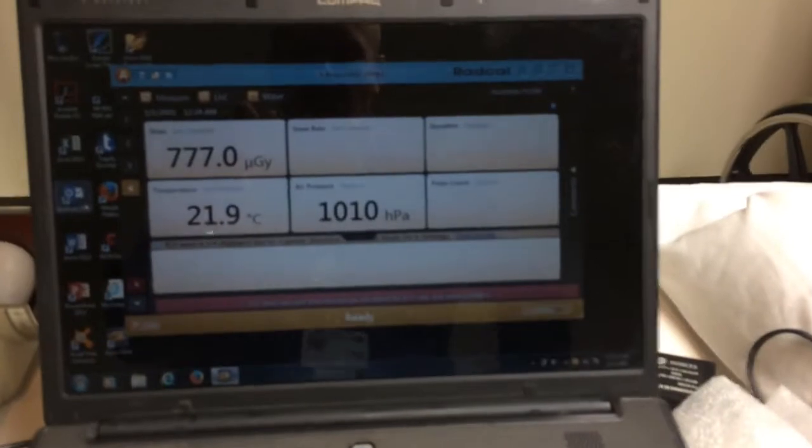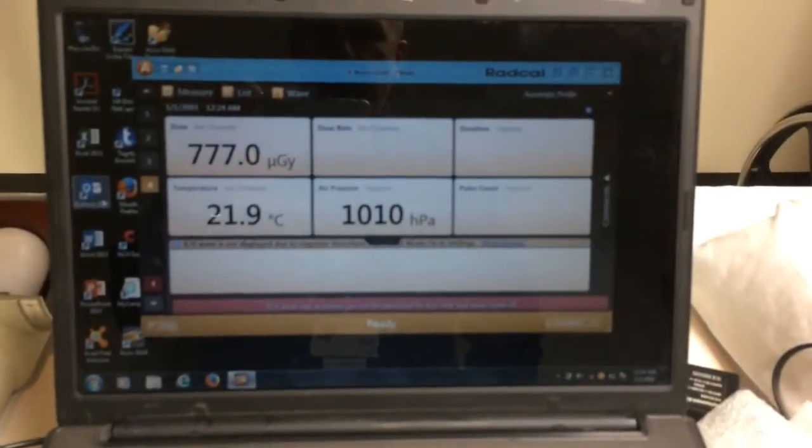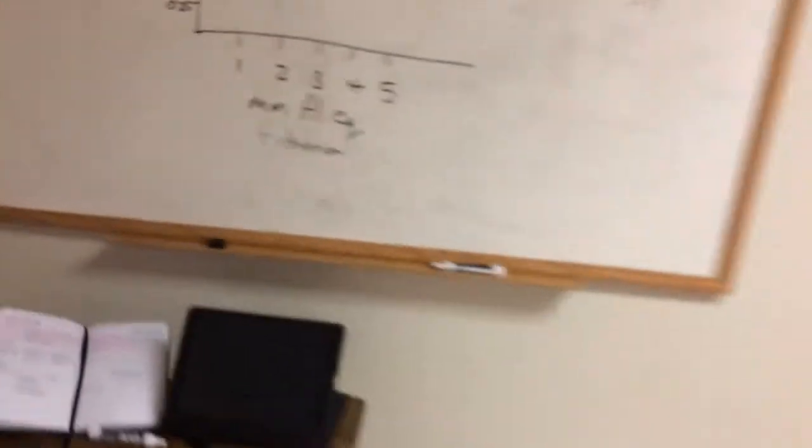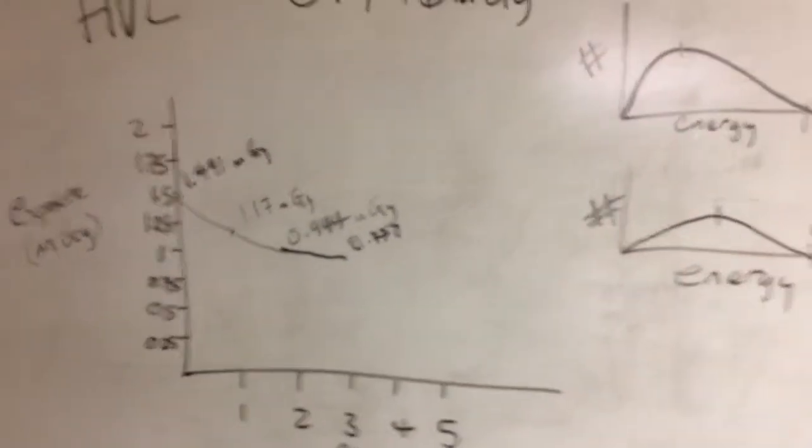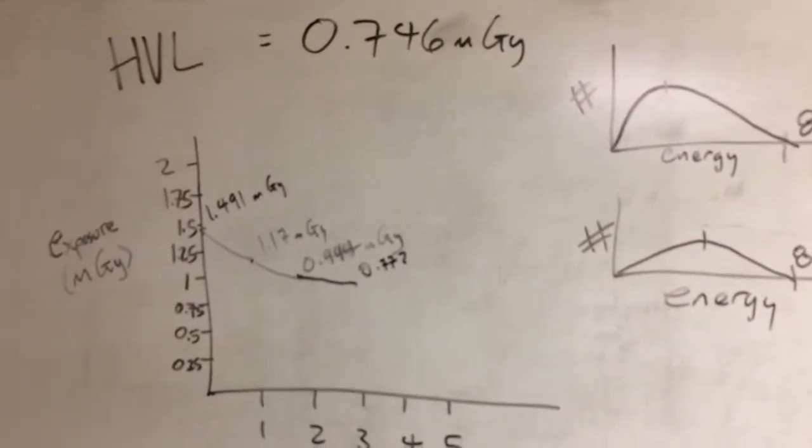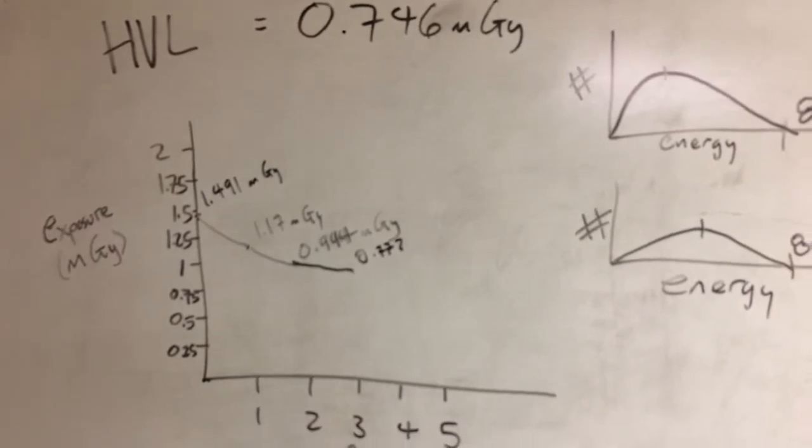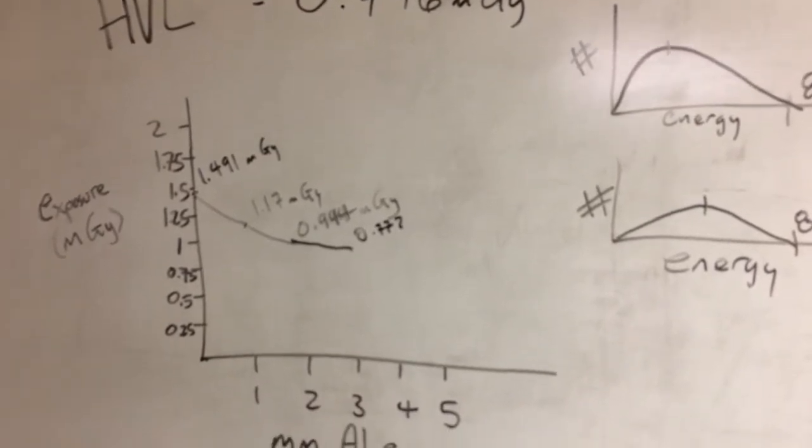I'm not changing anything about my setup except for the amount of filtration. Now we've got 0.777. What's interesting if we start to look at this line, we're getting very close. We're very close to our half-value layer. But it looks like the line is starting to flatten off.